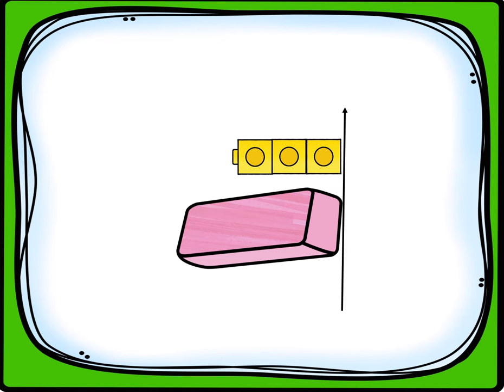two, three, four, five. We have five unifix for how long the eraser is. It's five unifix cubes long. And then also, this is about how far the eraser is. This is about.